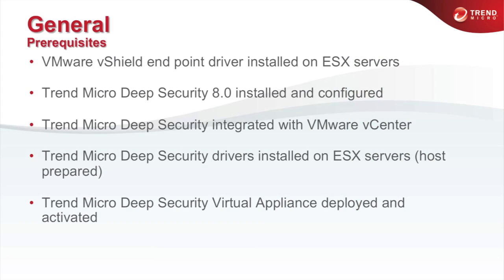To use agentless anti-malware, you need to install vSphere and ESX. You also need to install the vShield Endpoint Manager and deploy the vShield Endpoint driver to your virtual machines. Once this is done, you can start deploying Deep Security 8 — start with the Deep Security Manager and integrate it into vCenter. You also need to prepare the ESX host and install the filter driver, then deploy the security virtual appliance and activate it from the Deep Security Manager.